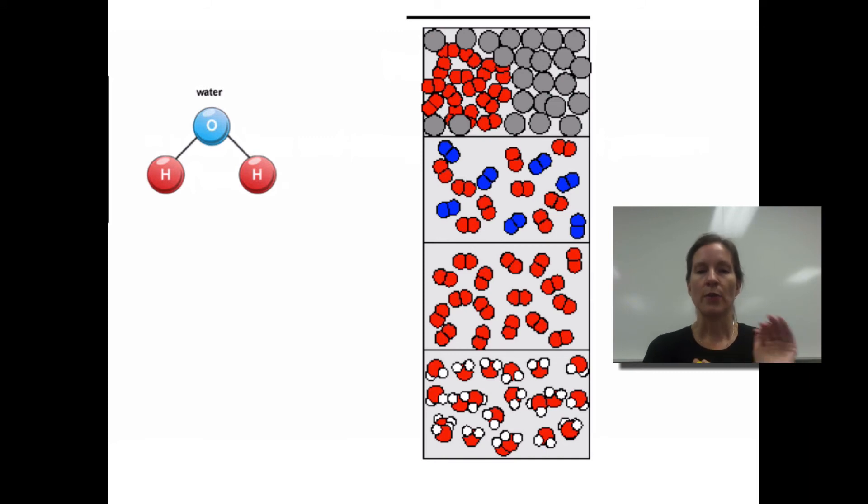Okay, so third picture down is element. Fourth picture down is compound. The top two then are mixtures. So you can tell they're mixtures because they have at least two different colored circles in their physical presence, so two or more things mixed together in one location. And then you can tell mixture not compound because they're not chemically bonded.